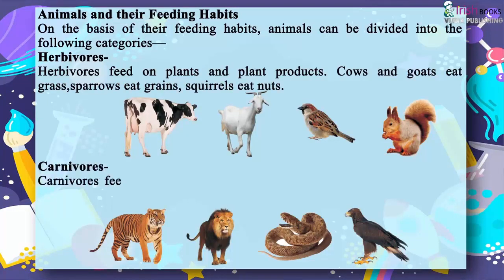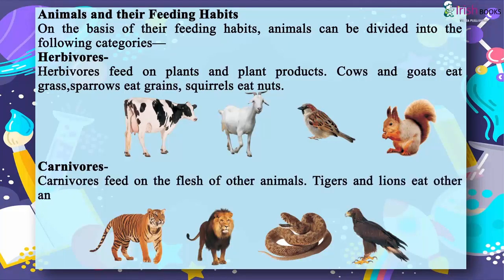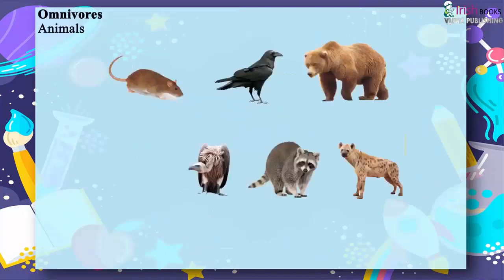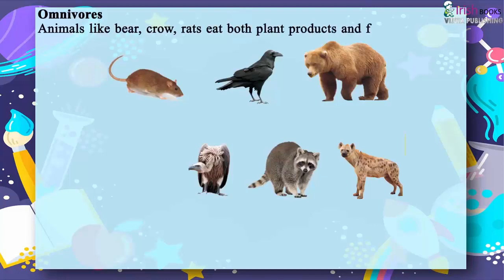Carnivores feed on the flesh of other animals. Tigers and lions eat other animals. Snakes and lizards swallow their prey whole. Eagles eat small animals. Animals like bear, crow, and rats eat both plant products and flesh of animals — they are called omnivores.